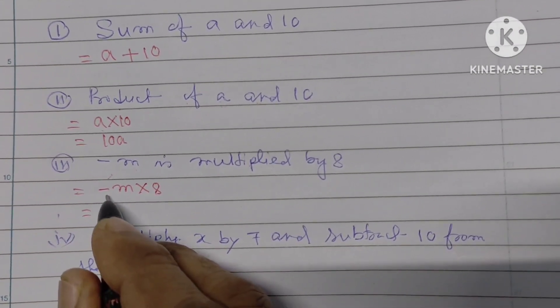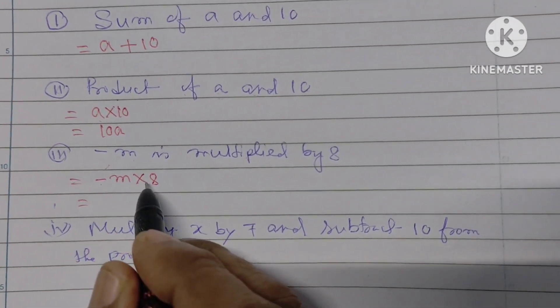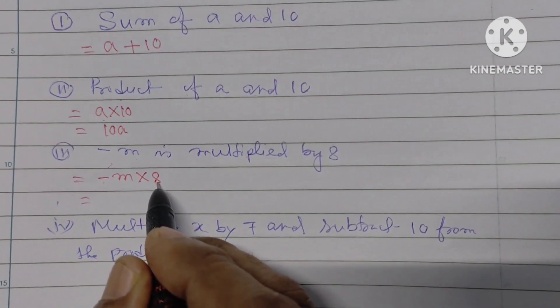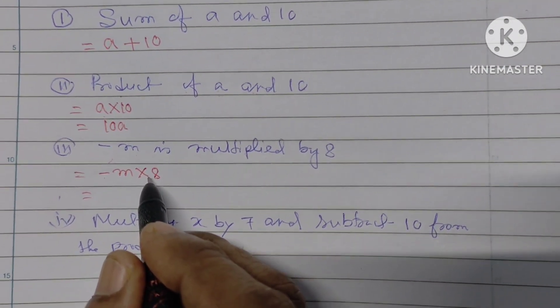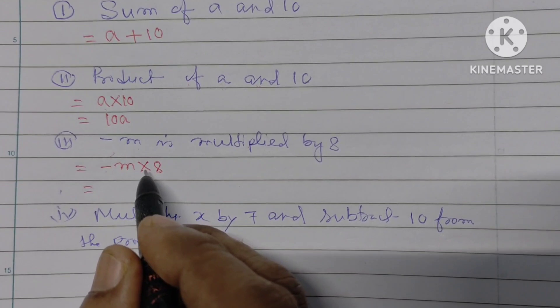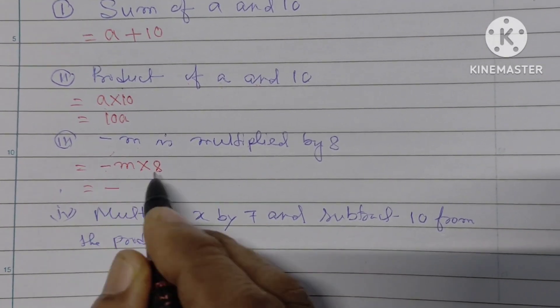We know that minus and before 8 there is no sign, that means plus. Plus into plus gives plus, plus into minus gives minus, minus into minus gives plus.